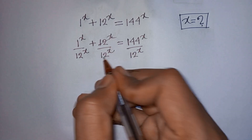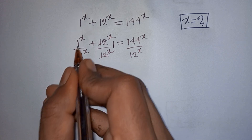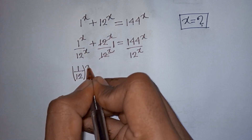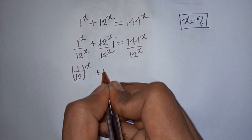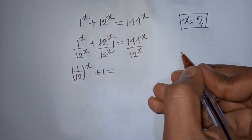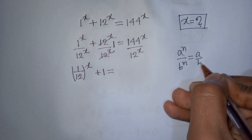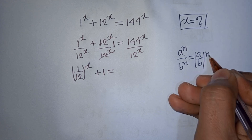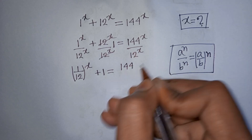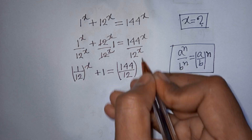This term will be cancelled, leaving 1. For the remaining terms, they share the same power x but different bases. So it will be (1/12)^x plus 1 is equal to (144/12)^x, using the exponential rule that a^n divided by b^n equals (a/b)^n.